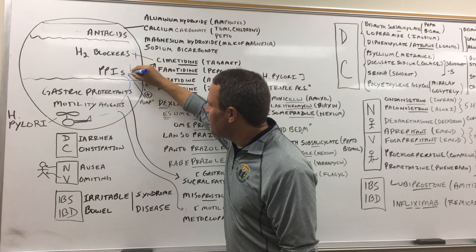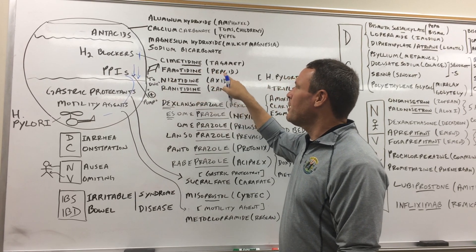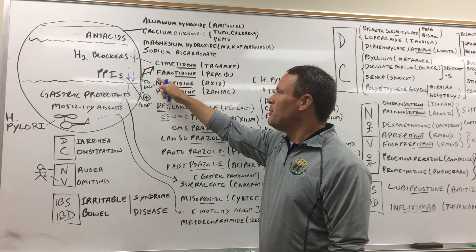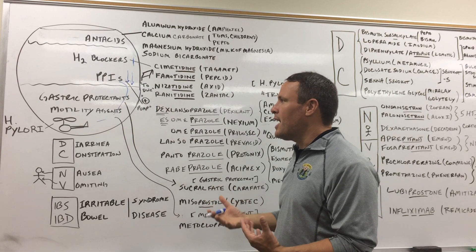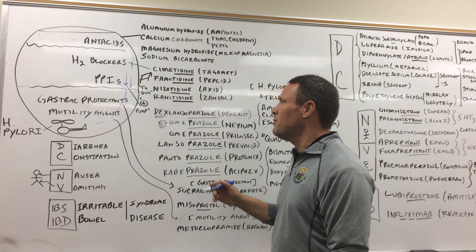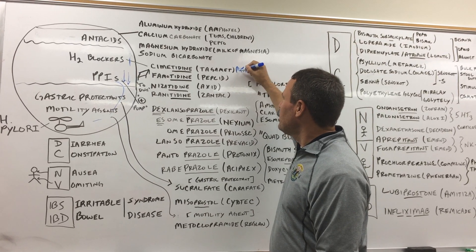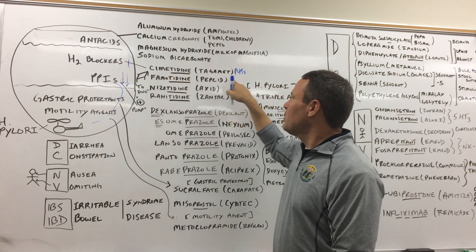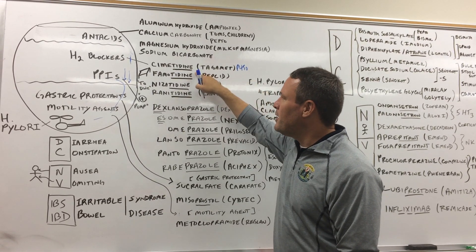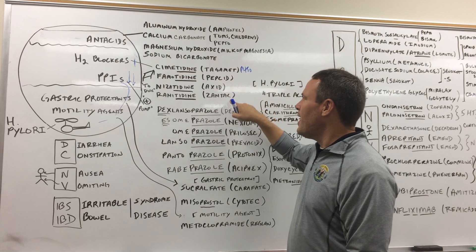H2 blockers and PPIs are actually meant to suppress acid, so I put them above the acid. And the H2 blockers, again, we remember that those end in Tidine, T-I-D-I-N-E. And we think of maybe a dining room table and that people are going to dine because after you dine, then it's when the acid problems come, the reflux and so forth. I put these in alphabetical order as well. And the nice thing is that the oldest ends up first, cimetidine. And this is the one that has those P450 interactions. We don't really see it too much in clinical practice anymore. But cimetidine, famotidine, nizatidine, ranitidine, Tagamet, Pepcid, Axid, and Zantac.